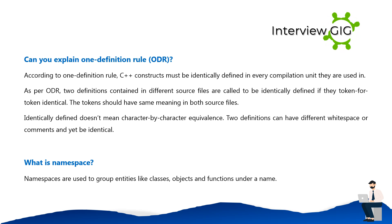Can you explain the One Definition Rule (ODR)? According to ODR, C++ constructs must be identically defined in every compilation unit they are used in. Two definitions in different source files are identically defined if they are token-for-token identical with the same meaning in both files. Identically defined does not mean character-by-character equivalence — two definitions can have different whitespace or comments and yet be identical.